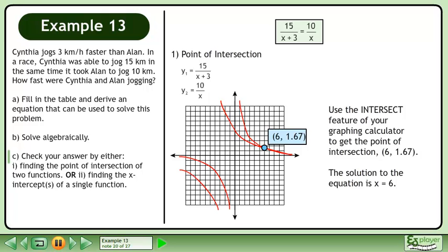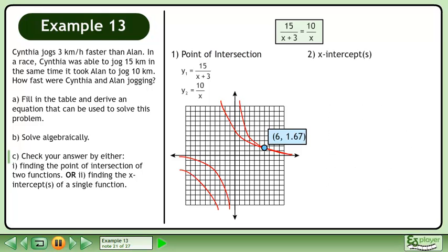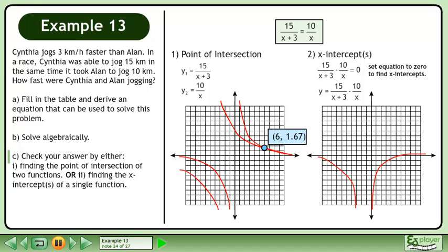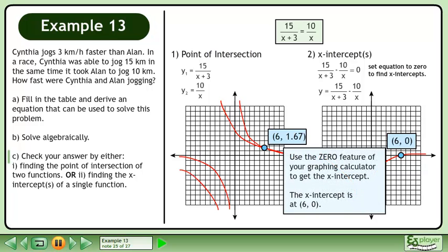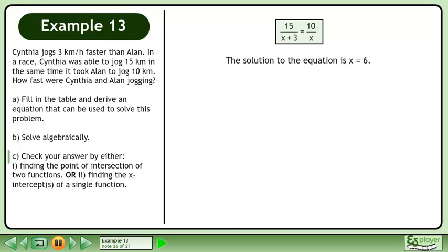The solution to the equation is x equals 6. Next, we'll find the x-intercepts. Set the equation equal to 0 to find the x-intercepts. The corresponding function is y equals 15 over (x plus 3) minus 10 over x. Use your graphing calculator to draw the graph, then use the zero feature to get the x-intercept at (6, 0). The solution to the equation is x equals 6.